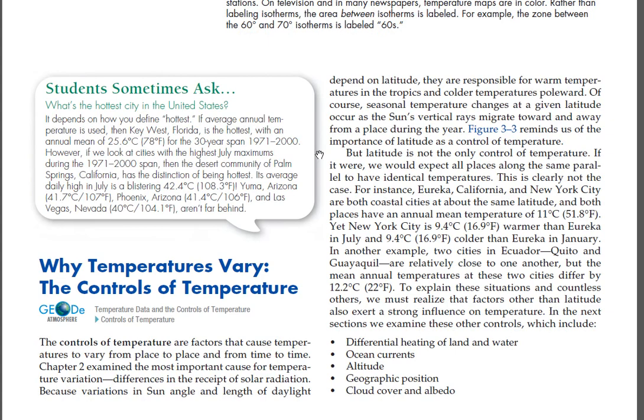But latitude is not the only control of temperature. If it were, we would expect all places along the same parallel to have identical temperatures — this is clearly not the case. For instance, Eureka, California and New York City are both coastal cities at about the same latitude, and both places have an annual mean temperature of 11°C (51.8°F). Yet New York City is 9.4°C (16.9°F) warmer than Eureka in July and 9.4°C (16.9°F) colder than Eureka in January.